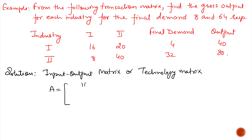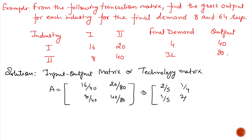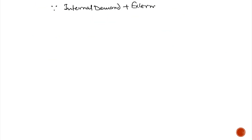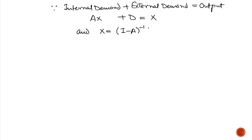We get the technology matrix by dividing the input of the first industry by the output of the first industry, and the input of the second industry by the output of the second industry. We get 2/5, 1/4, 1/5, and 2/4. D is 8 and 64 — this is the forecast demand. Let the output be X1 and X2. We know internal demand plus external demand equals output, so AX plus D equals X, and X equals (I minus A) inverse times D.